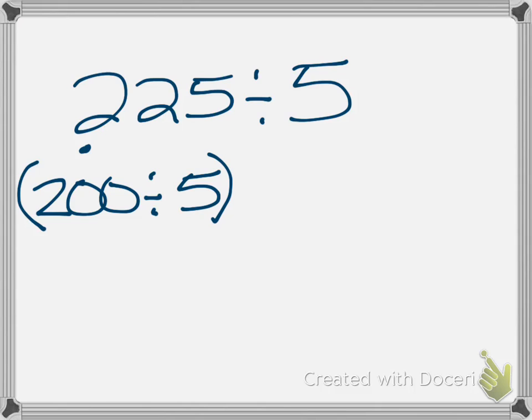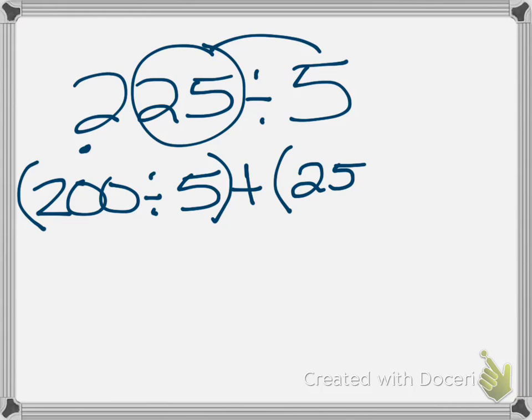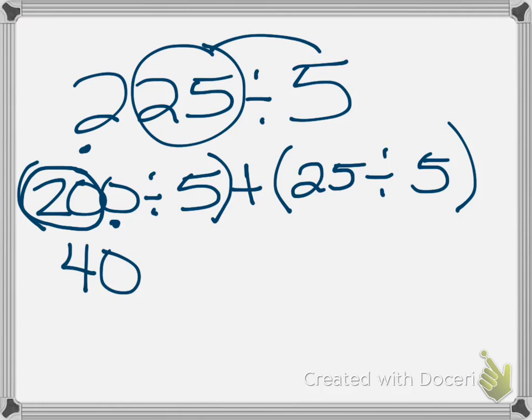And then I can tell, I can visualize the 25, and I know that 5 goes into 25. So I'm going to add this part of it, 25 divided by 5. Now going back to the previous lesson, I see that 5 goes into 20 four times, but it's not just 20, it's 200. So 5 goes into 200 forty times, plus 25 divided by 5 is 5.